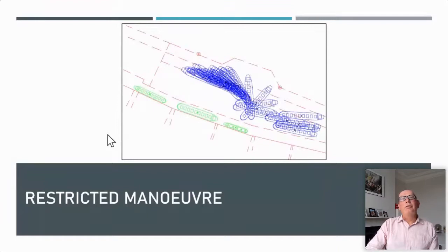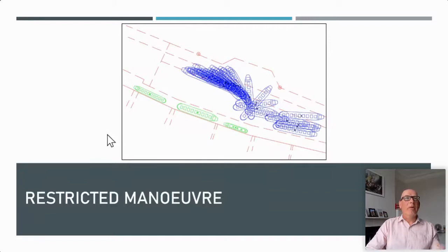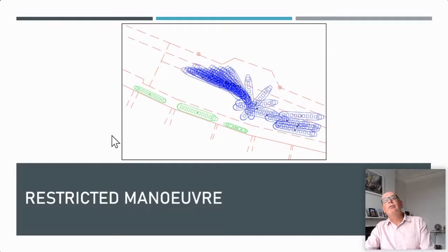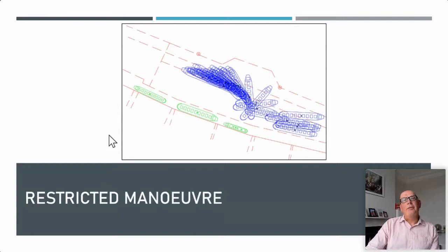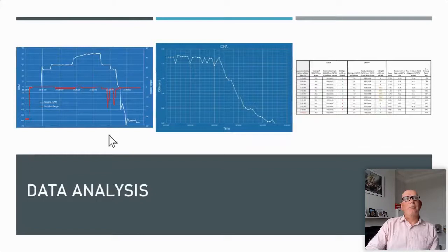Also, use of data in an unsafe port claim — a large Cape size bulk carrier was turning in a basin and made contact. There was a claim for unsafe port, but by going back through the data for numerous vessels that had carried out the same manoeuvre, it was clear that this manoeuvre had been carried out successfully almost 50 times before. That comparison of one vessel with other vessels that have used the same area is something which is becoming more and more frequent in analysing incidents.